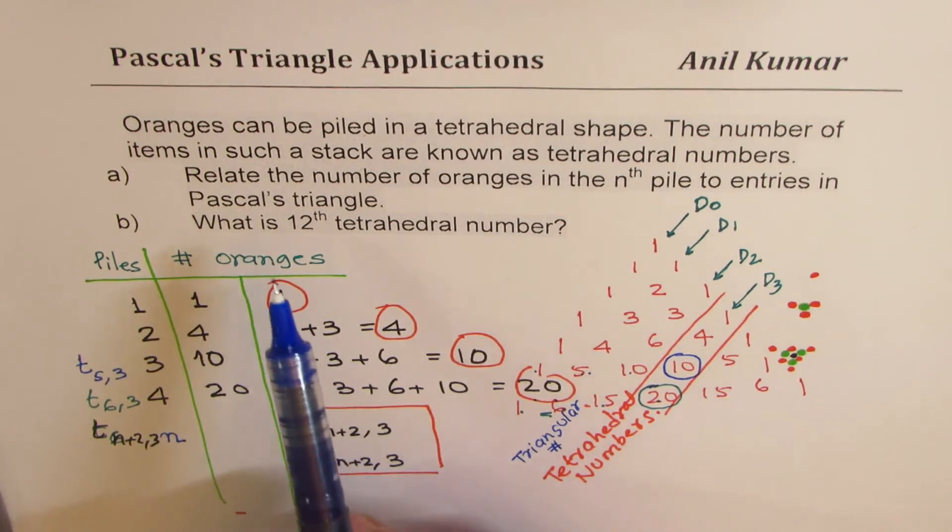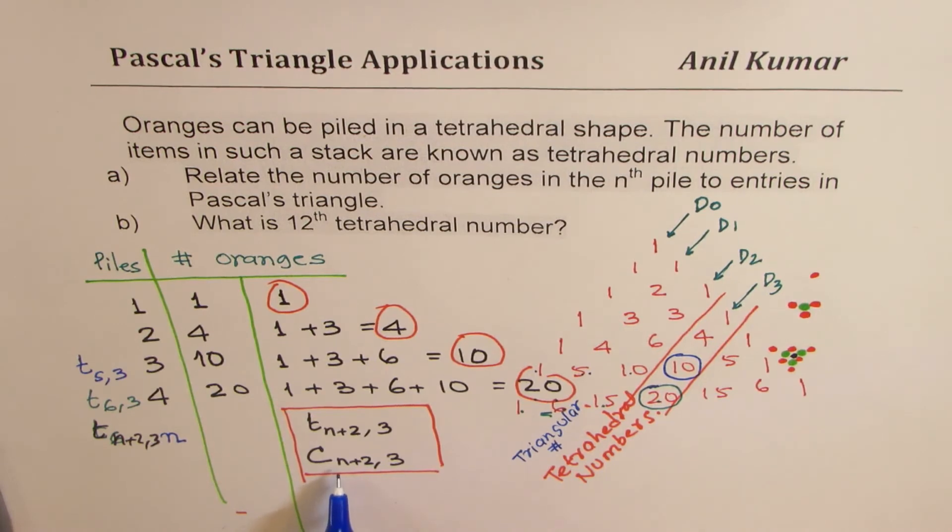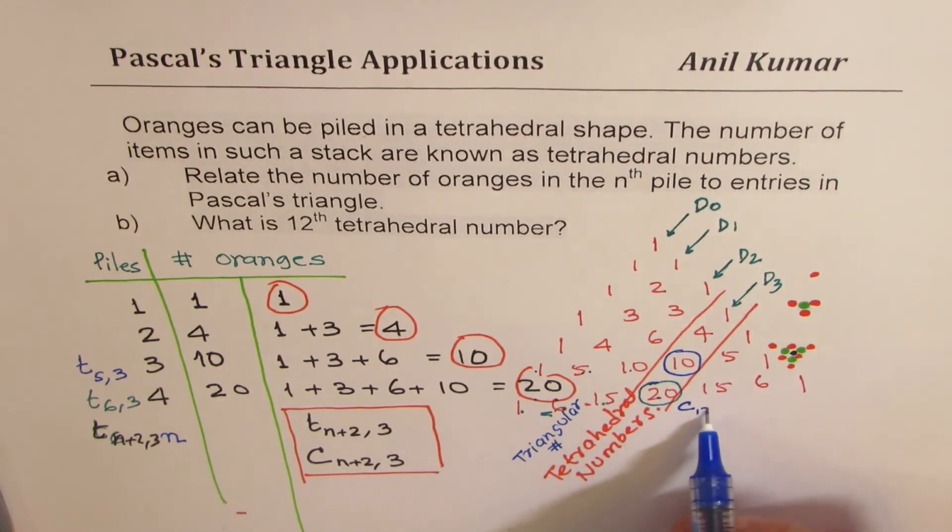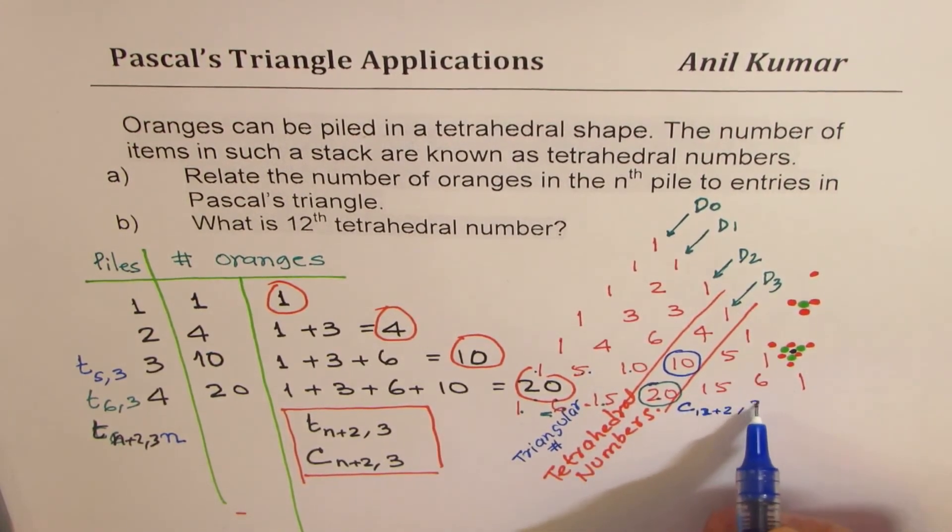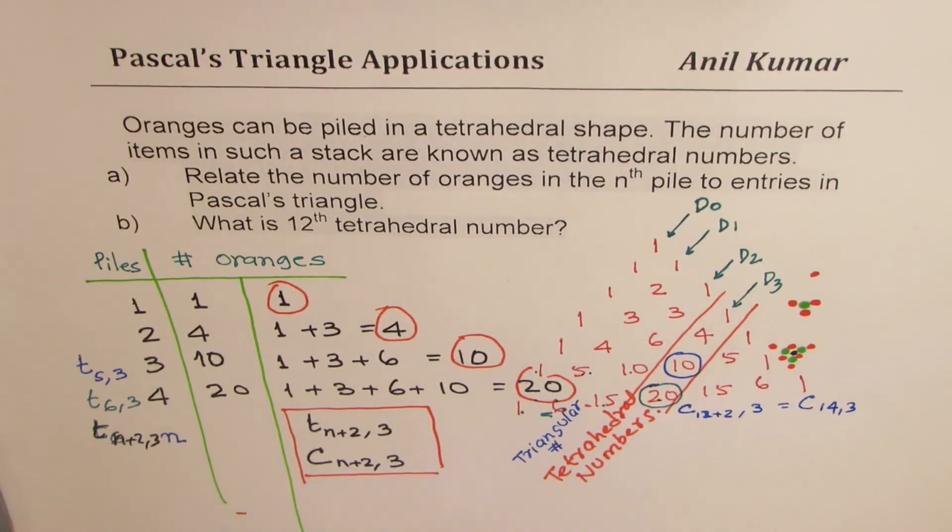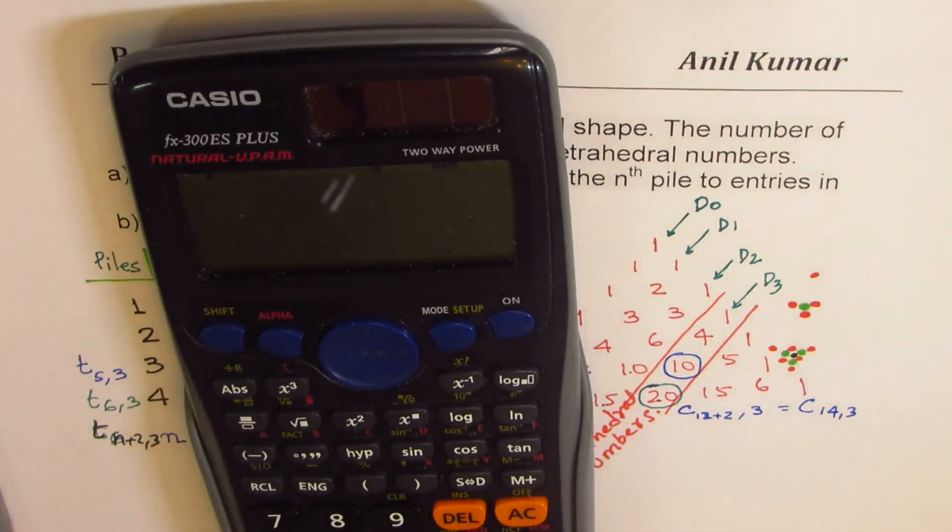can you calculate the 12th tetrahedral number? Well, replace n with 12 and just calculate. So we'll use C 12 plus two, three. That means C 14, three. Perfect.